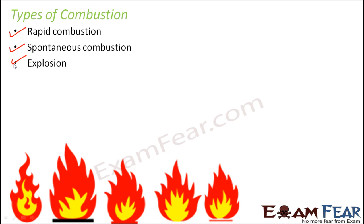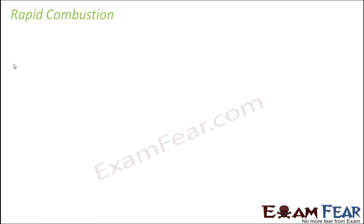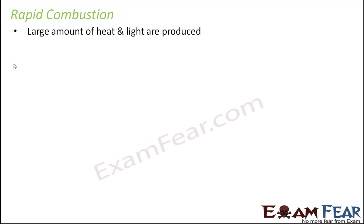Let us start with rapid combustion. Rapid means something which happens very fast. In this type of combustion, a substance gets burned very fast and during the process, a large amount of heat and light are produced. So heat and light both will be produced.